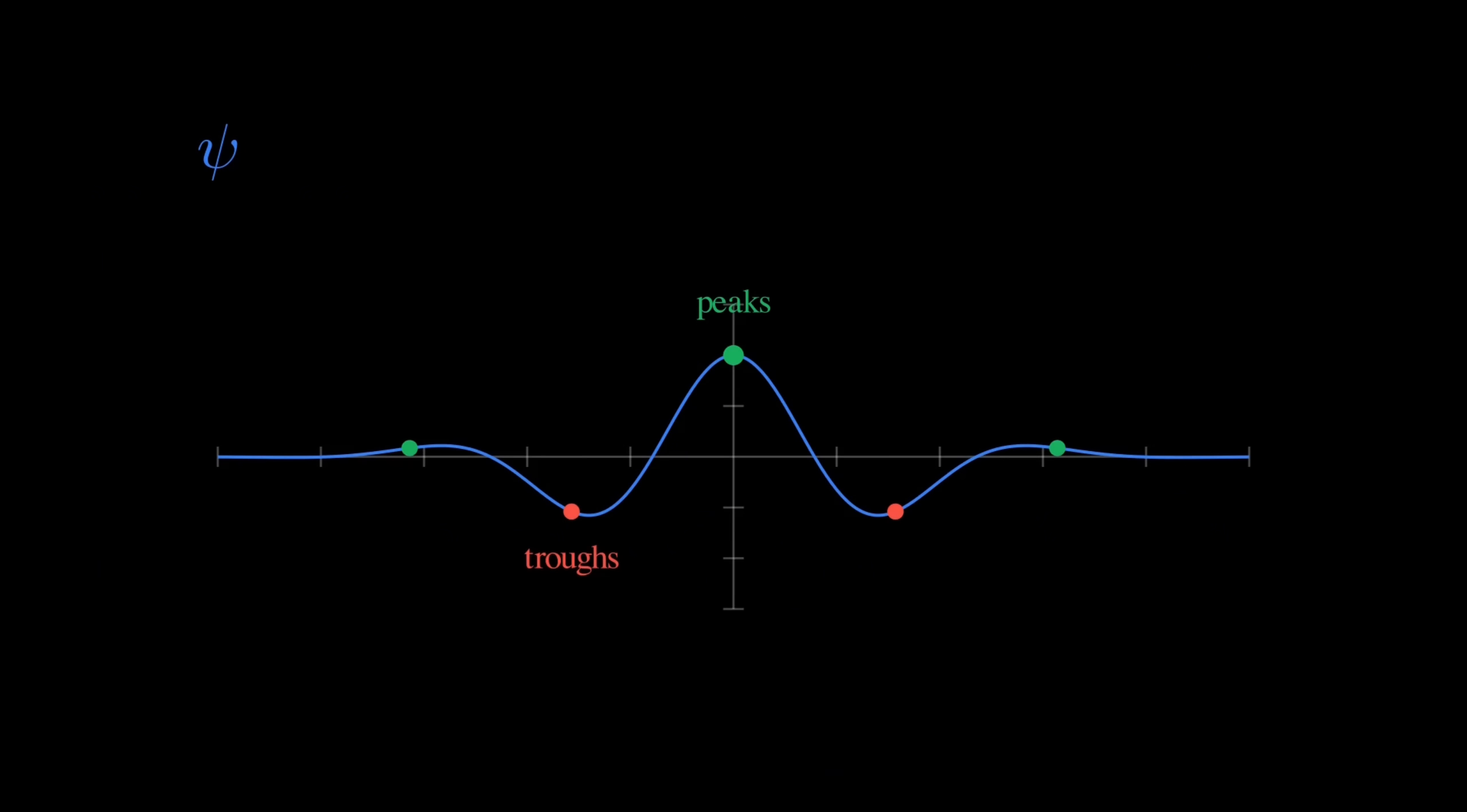This is where the wave function comes in. Physicists represent this quantum fuzziness with a mathematical object called psi. Psi is a wave that spreads through space, oscillating with peaks and troughs. But here's the crucial thing: this isn't a physical wave like a water wave. You can't see it or touch it. It's a mathematical tool that encodes all the information about a quantum particle.